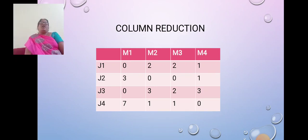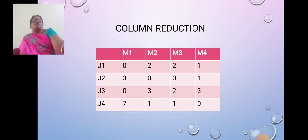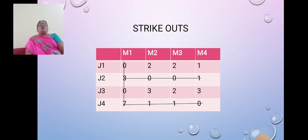After column reduction, we move to the strikeout step, then proceed to allocation and find the cost of assignment. We identify possible zeros and strike them out. In M1, there are 2 zeros — we strikeout M1. In J2, there are 2 zeros — we strikeout J2. In J4, there is only 1 zero — we strikeout J4. From the remaining numbers, we elect the minimum value, which is 1. We subtract 1 from the rest of the numbers, and at the intersection points, we add 1.